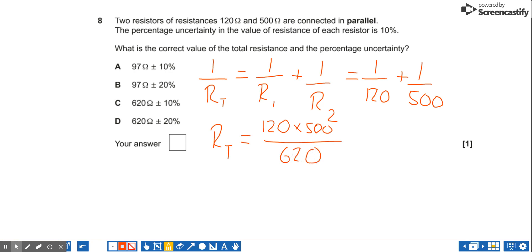So that comes out as being 97 ohms. So we've now got the choice between A and B.